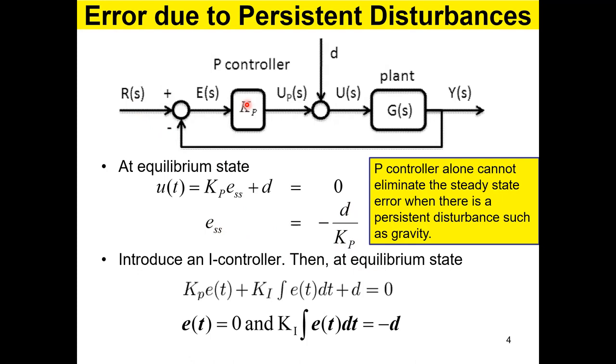If we introduce an I controller, making it a PI controller, the integral term accumulates the error over time multiplied by Ki.